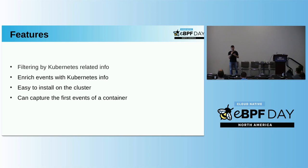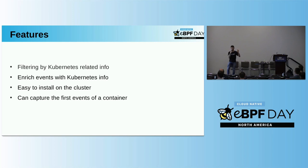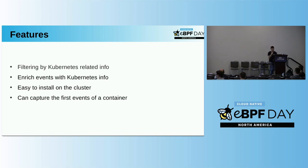There are cases where a pod crashes right at the beginning and you don't even have logs because it crashes immediately. We have a complex mechanism in Inspector Gadget to capture the very first events of a container. When a container is starting, we pause the creation briefly, set up all the infrastructure we need, then let the creation continue. This allows us to trace the very first events the container performs — so we have complete information from the very beginning.